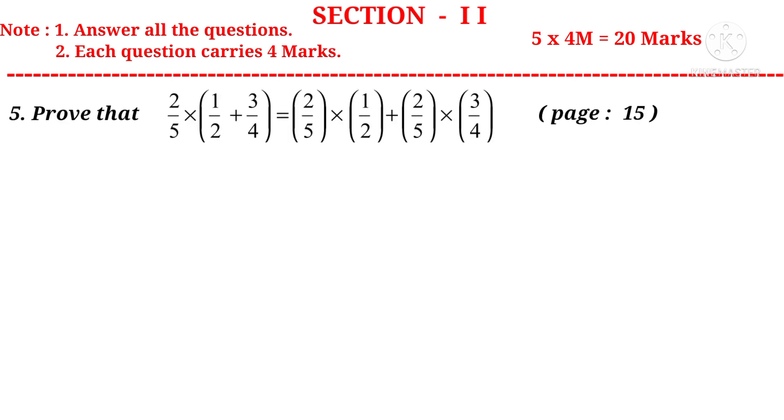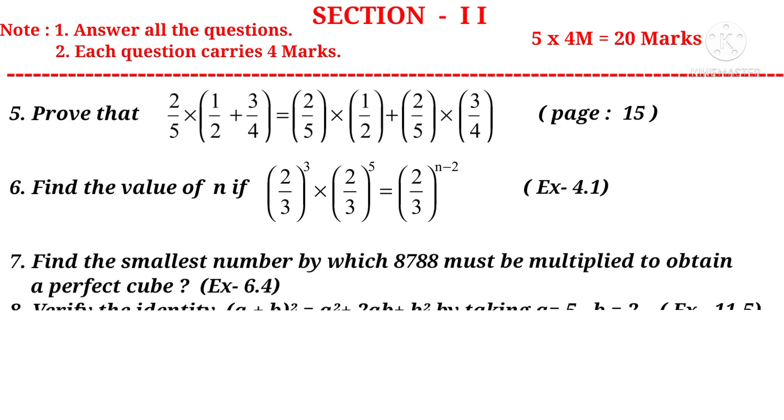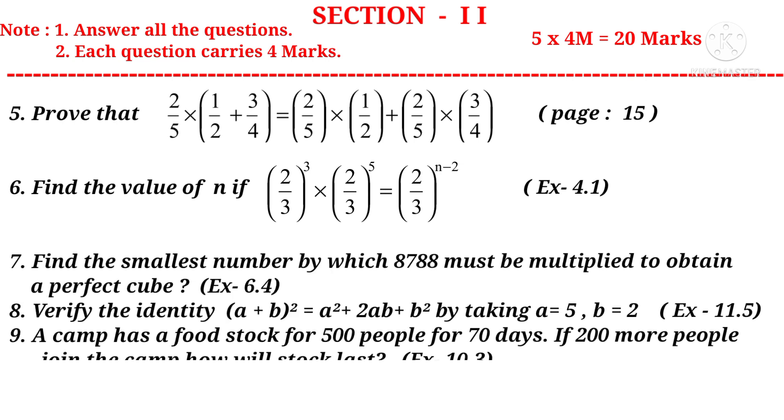Question 5: Prove that 2/5 × (1/2 + 3/4) is equal to 2/5 × 1/2 + 2/5 × 3/4. It is a question from the first chapter. Number 6, find the value of n if (2/3)^3 × (2/3)^5 is equal to (2/3)^(n-2). It is a question from the 4th chapter.